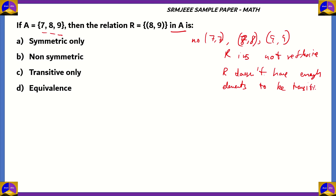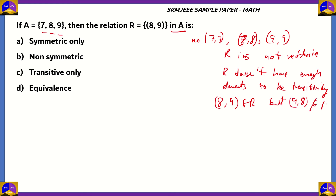For transitivity, you need at least three relations: if (a, b) and (b, c) belong to R, then (a, c) must also belong to R. For symmetry, the element (8, 9) belongs to R, but (9, 8) does not belong to R, so R is not symmetric.